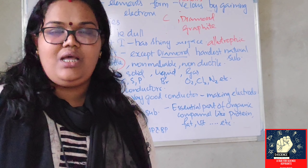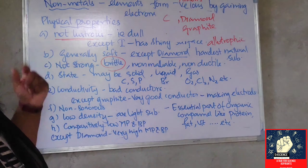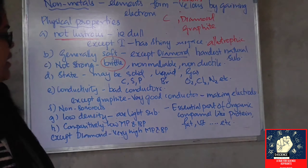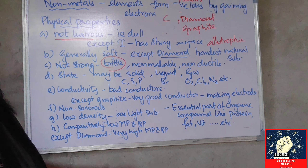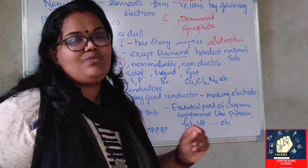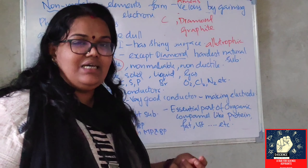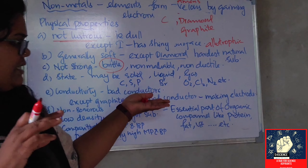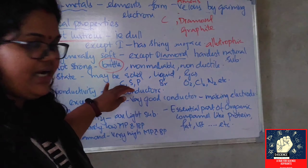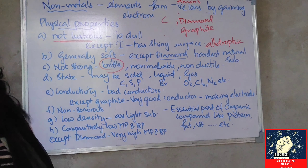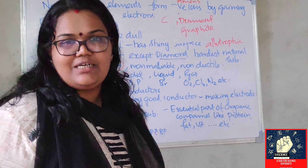Now let us look at the physical state of nonmetals. Metals are commonly solid in nature, with one exception — mercury, which is liquid. What about nonmetals? Nonmetals can be found in solid, liquid, and gaseous states. Solid nonmetal examples: carbon, sulfur, phosphorus. The only liquid nonmetal at room temperature is bromine. Gaseous nonmetal examples: oxygen, nitrogen, hydrogen, chlorine.